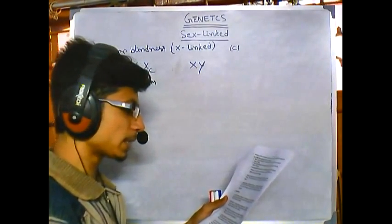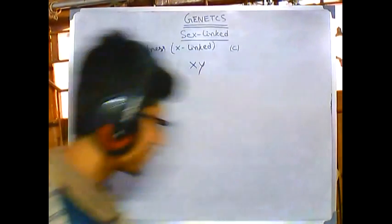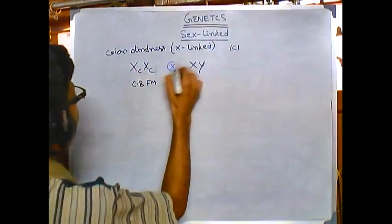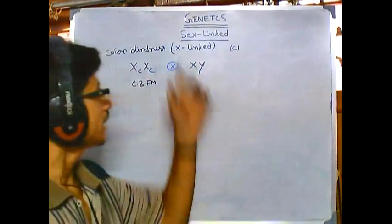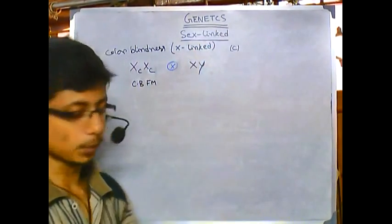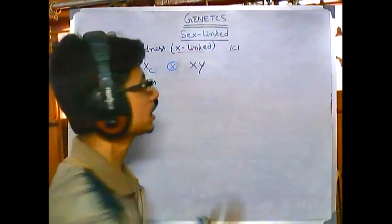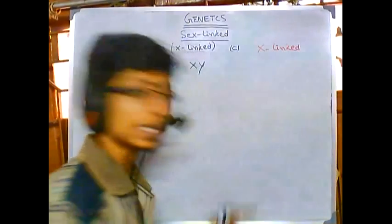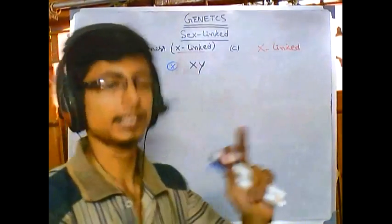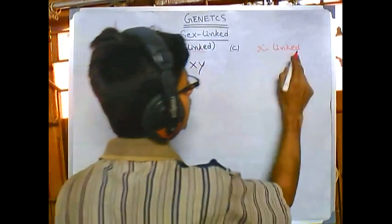So the question is: what would be the expected phenotypes of the children with reference to this character? If we make a cross between this, one thing you should understand very importantly is that X-linked means X-linked is the first important thing. The second thing is that in case of X-linked inheritance, there are sometimes also Y-linked inheritance, but most of the cases are X-linked.